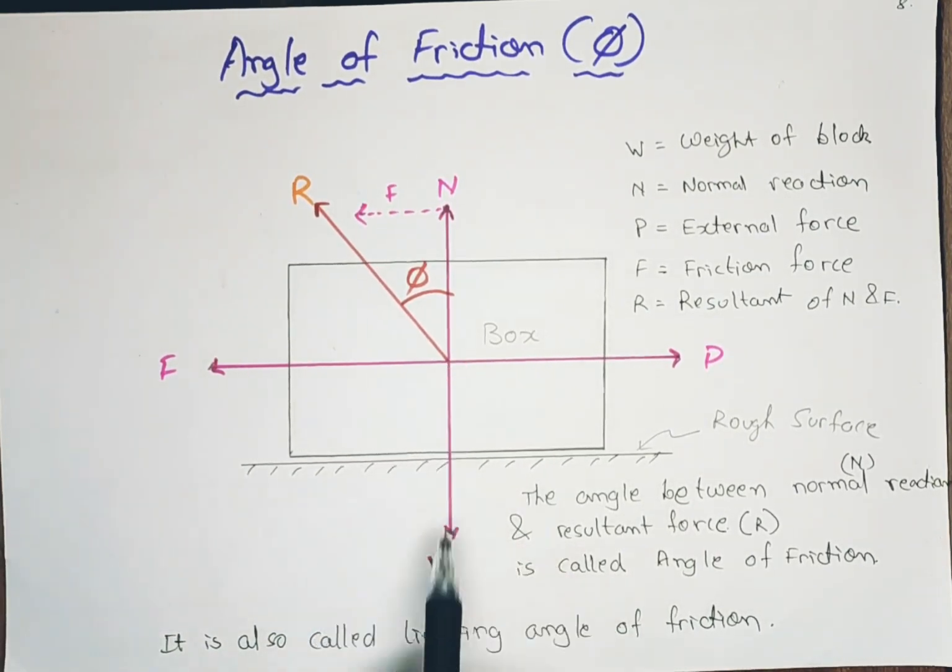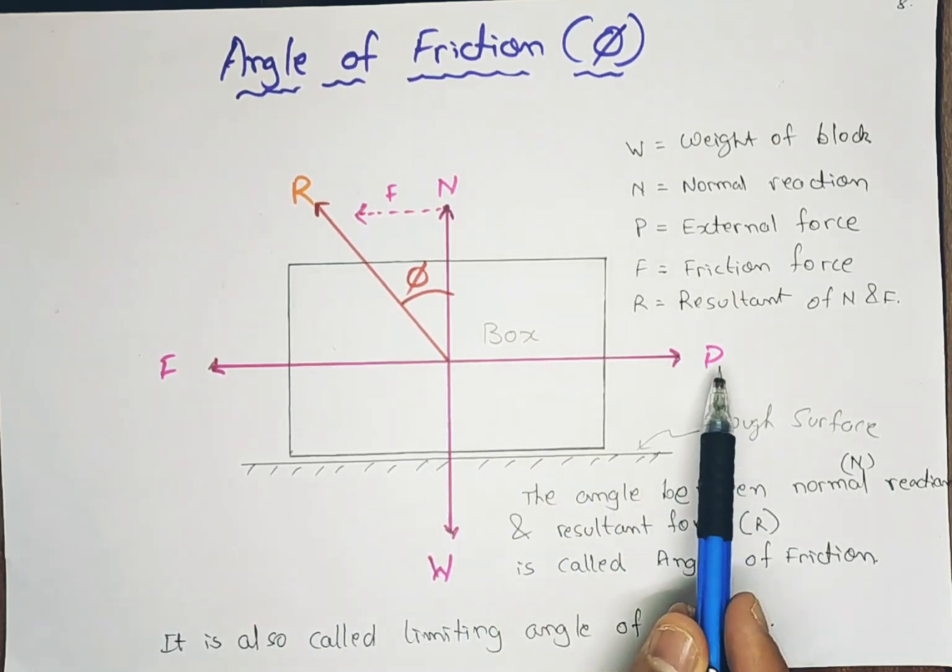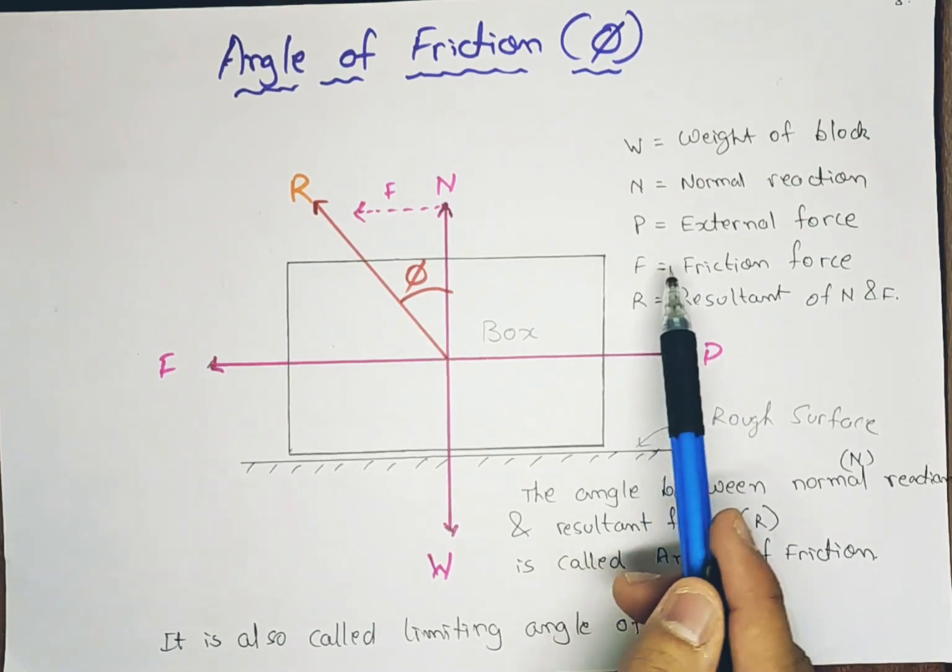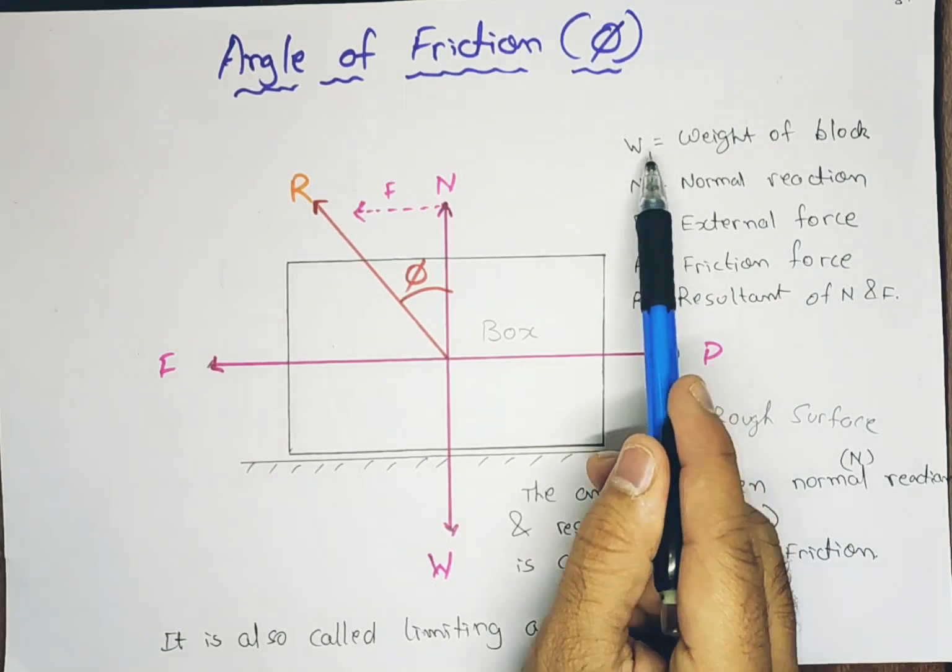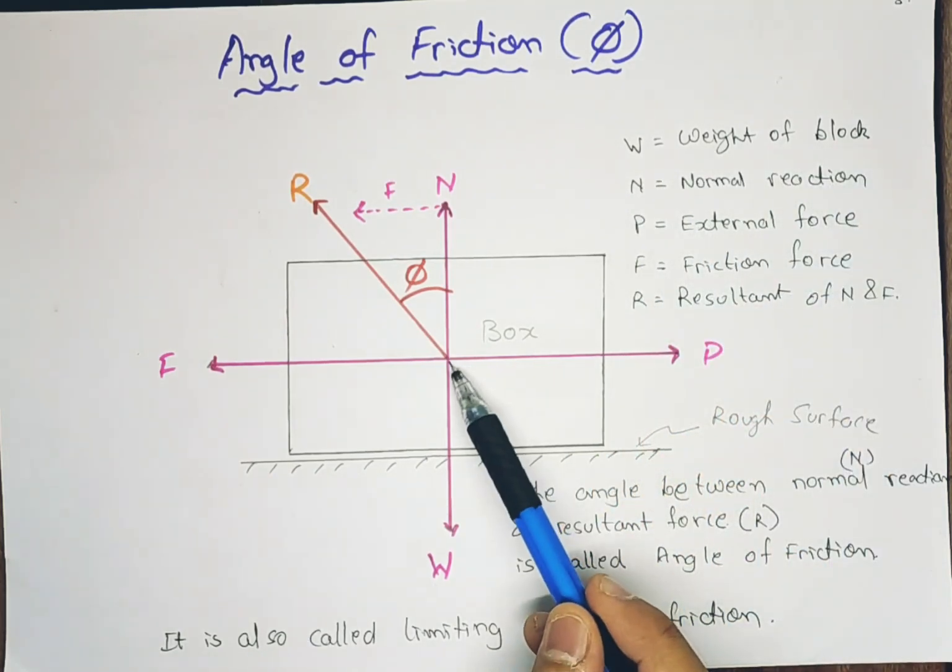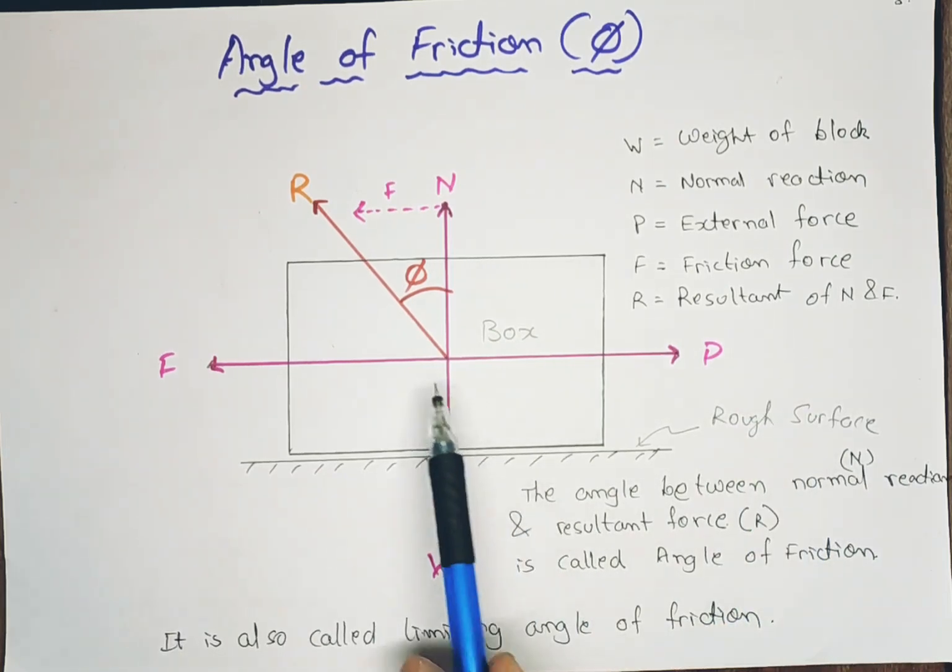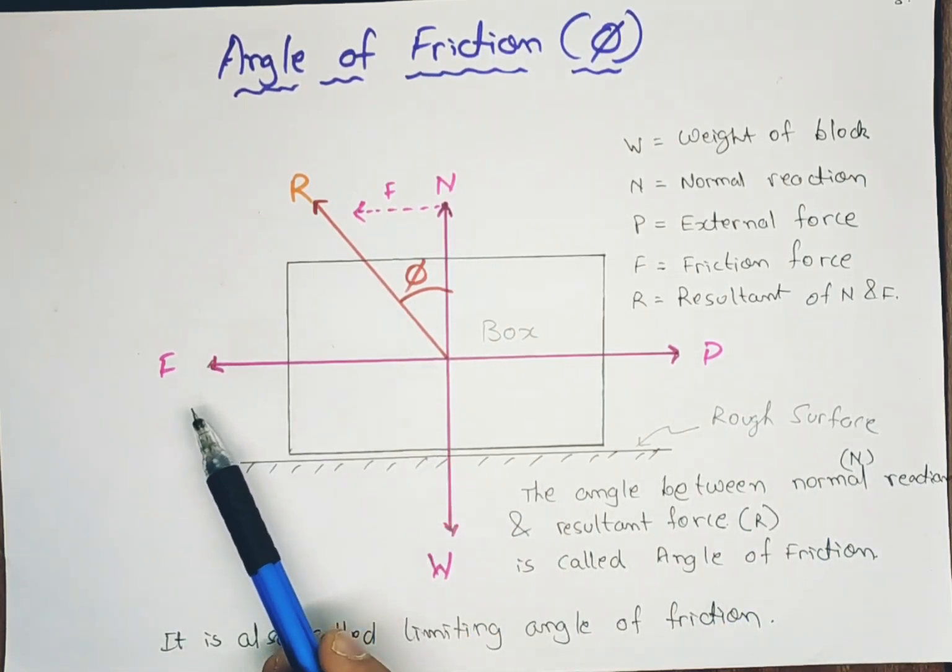The weight acting will be towards the gravity, that is downwards, and it is abbreviated by W. If we apply a force capital P, abbreviating the external force as P, as given over here, and W is weight of the block. If we apply the force in this direction, then the friction force will be opposite to the applied force or opposite to the external force.